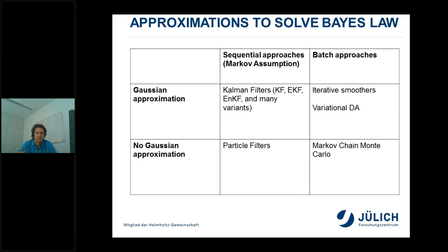There are different approximations to solve Bayes' law, divided into four groups. We can make a Gaussian approximation or not, and we can take a sequential or batch approach. A sequential approach processes measurement data sequentially: measurements at a time point are combined with model predictions, the states are updated, and we move to the next time point. This is based on a Markov assumption. Sequential approaches are Kalman filters if Gaussian, and particle filters if non-Gaussian. A batch approach considers measurement data over different time steps — possibly a few years in groundwater modeling, or a 12-hour window in atmospheric data assimilation, using variational data assimilation.